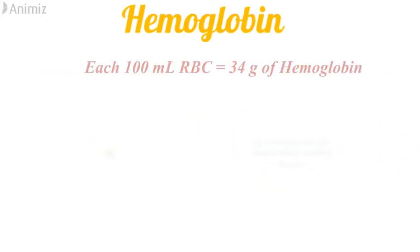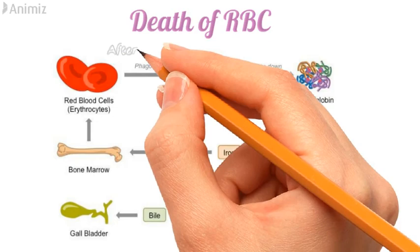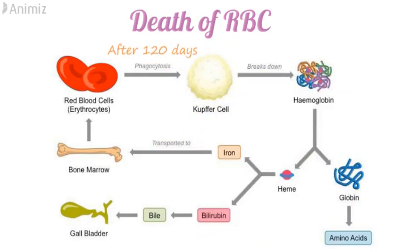Now let's have a look at how a red blood cell dies. The average lifespan of a red blood cell is about 120 days, and they are destroyed by the reticuloendothelial system of the body. Kupffer cells break down the RBC into hemoglobin. Kupffer cells are present in the spleen, and the spleen is called the graveyard of RBC. The globin part of hemoglobin — the polypeptide chains — gets added to the protein pool of the body and is used later. The iron of heme gets stored in the bone marrow and is used later. The porphyrin ring gets converted to bilirubin and is excreted from the body by the gallbladder.